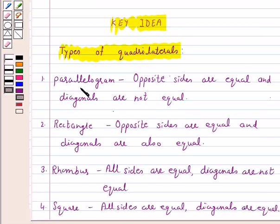For parallelogram, we have to prove that opposite sides are equal and diagonals are not equal. A quadrilateral is a rectangle if opposite sides are equal and diagonals are also equal. And for rhombus, we will prove that all sides are equal and diagonals are not equal. And for square, all sides are equal and diagonals are equal.